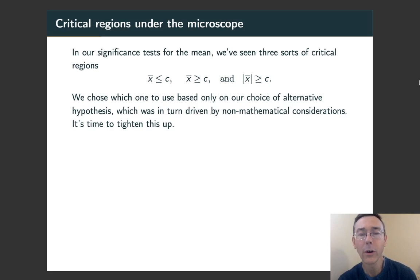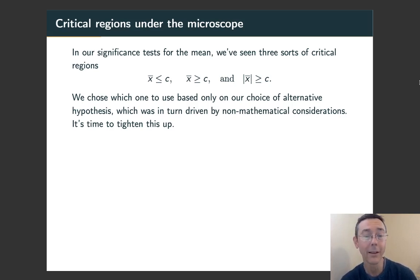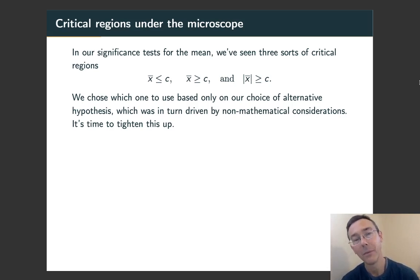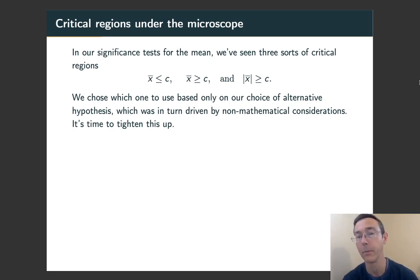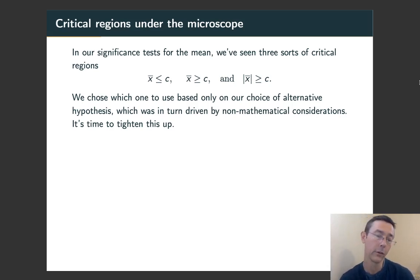So far we've had three sorts of critical regions: a left-handed, a right-handed, and a two-sided. We just picked them to correspond to alternative hypotheses, and we didn't really talk about why they might be justified beyond just those sort of real-world considerations.